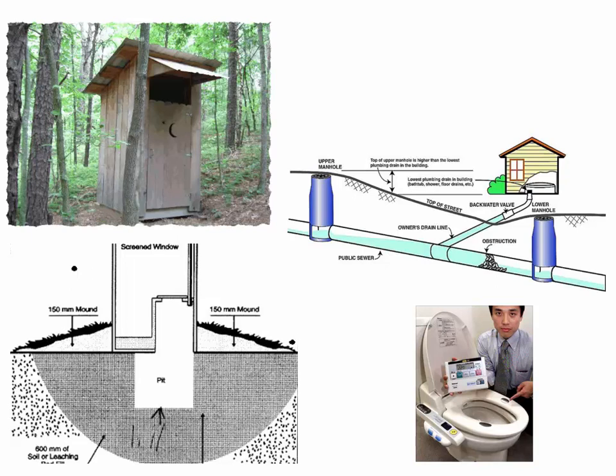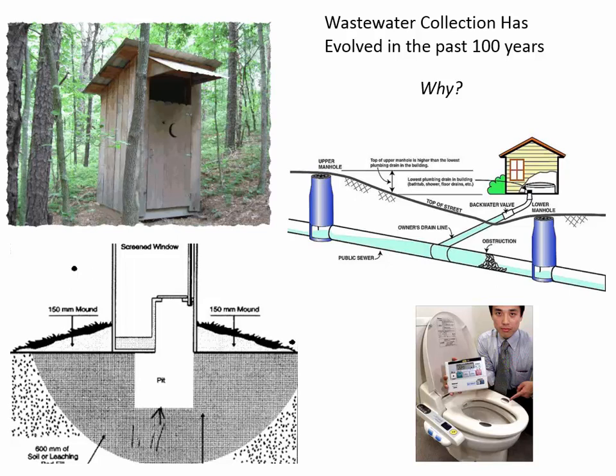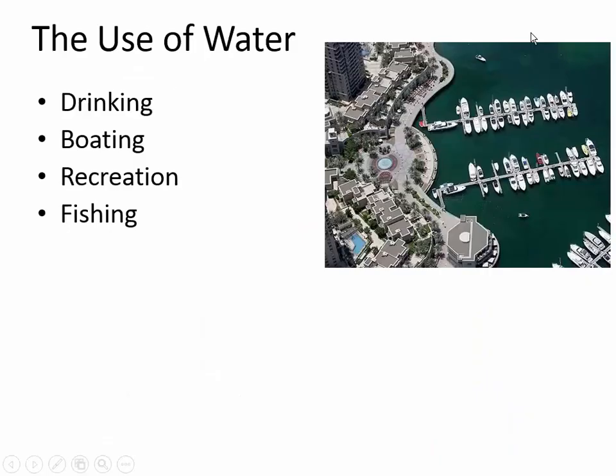These are manholes — access hatches so that sewer lines can be inspected and periodically cleaned. The reason things have evolved over time is population: the population of the earth is now approaching seven billion, whereas just a hundred years ago it broke one billion for the first time. We've gone from less than a billion to seven billion, and we've become more concentrated in cities, making it more important to deal with pollutants and avoid diseases.